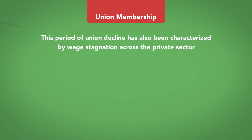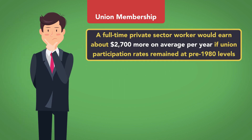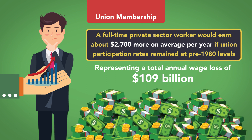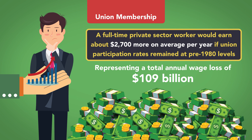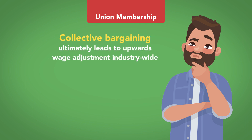This period of union decline has also been characterized by wage stagnation across the private sector, as the drop in labor union participation has caused a decrease in wages for non-union employees. Studies show that a full-time private sector worker would earn about $2,700 more on average per year if union participation rates remained at pre-1980 levels, representing a total annual wage loss of $109 billion. Even non-union workers benefit from a strong union presence in their industries, as collective bargaining ultimately leads to upward wage adjustment industry-wide.